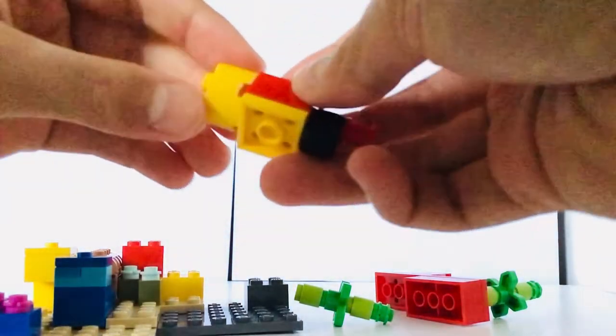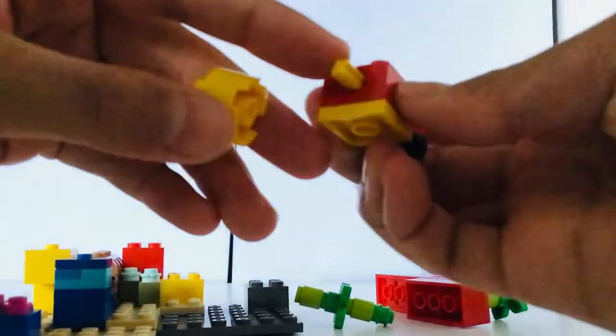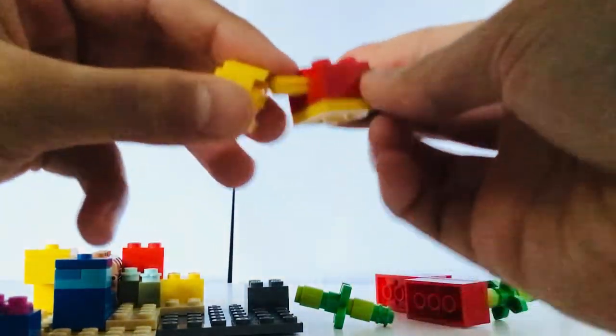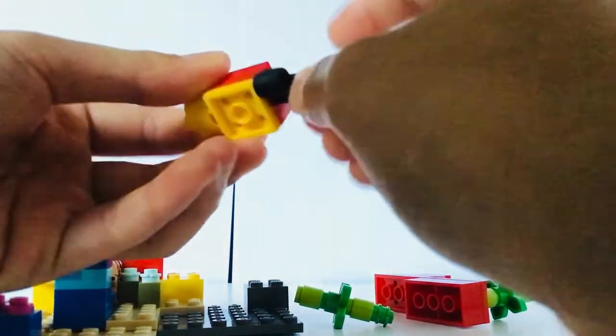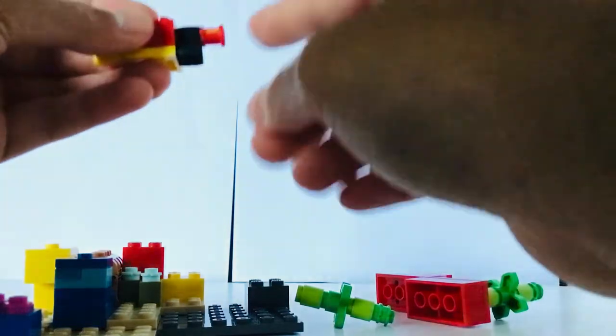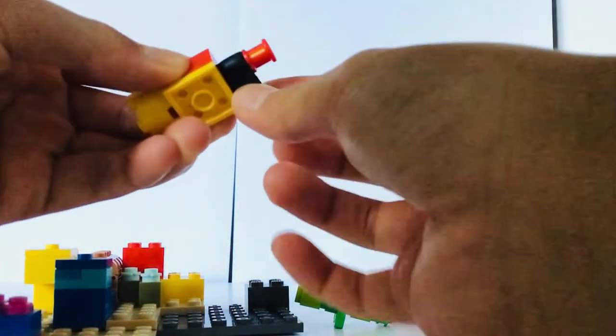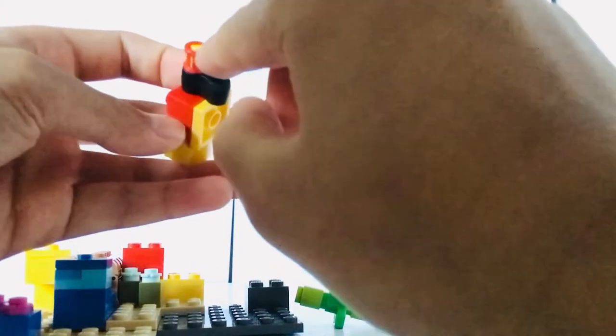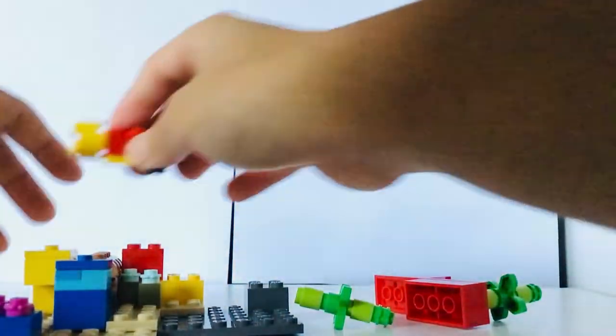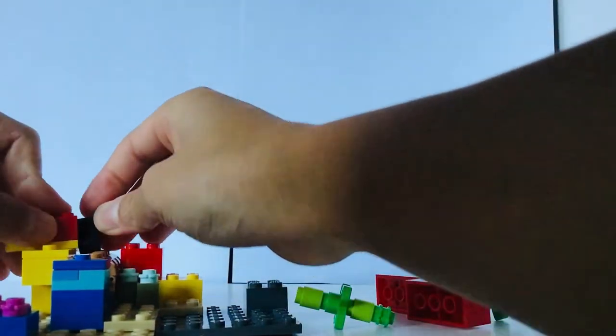They put an axle in this circle brick with the hole in it. And then they just put the rubber piece to connect with the axle, and this axle blocker. And that's how the function works.